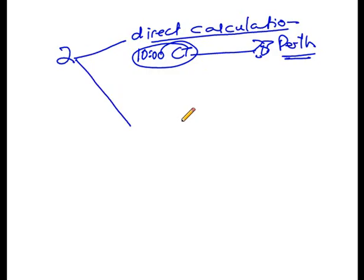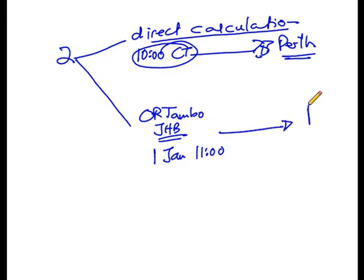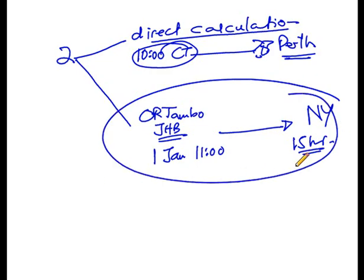The second type of calculation is where they include flying time. So you might get a question that reads: a businessman departs from OR Tambo — which is in Johannesburg — on the 1st of January at 11 o'clock in the morning. He flies to New York, and his flight was a 15-hour flight. So what time did he arrive in New York? That is the second type of calculation.